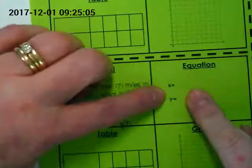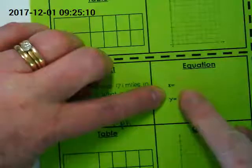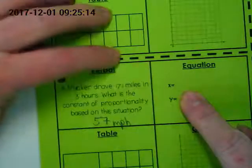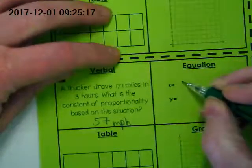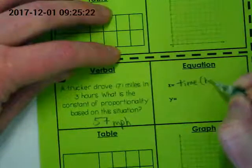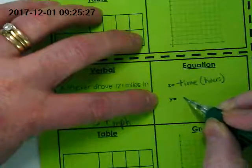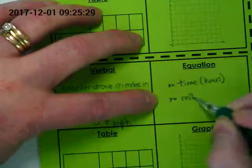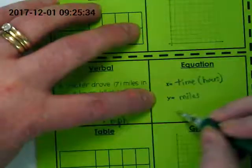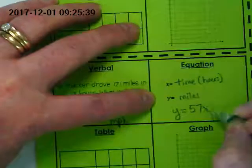Now, this equation part says, what is the X? Well, what did we decide the X was? It's the time, it's the independent, and it's the hours. And what did we decide our Y is? It's the distance, or in this case, miles. Our equation then is going to be Y is equal to 57 times X.